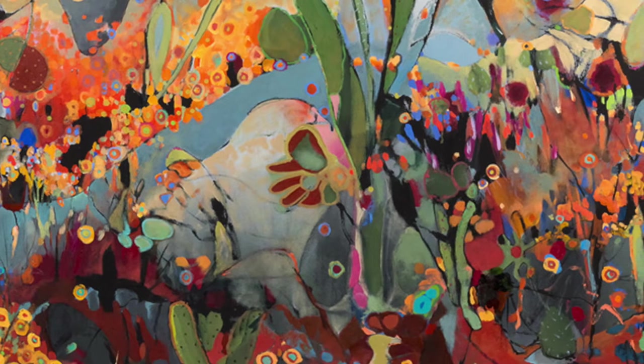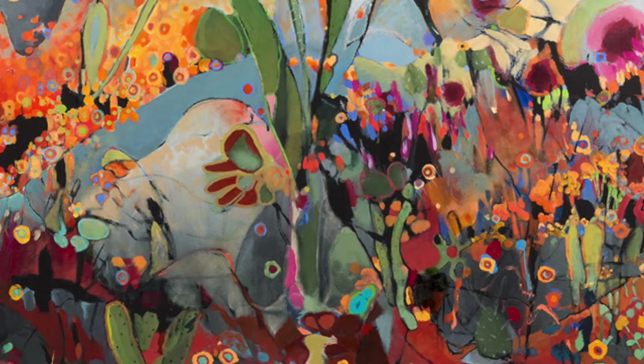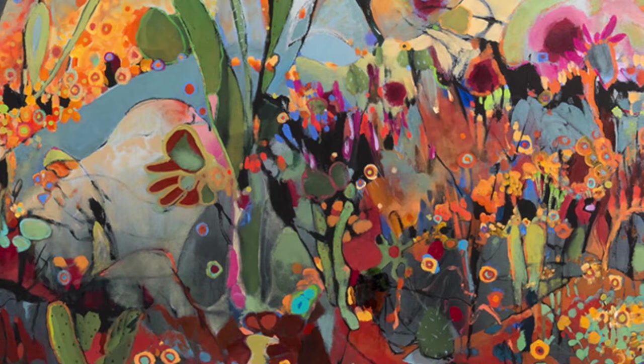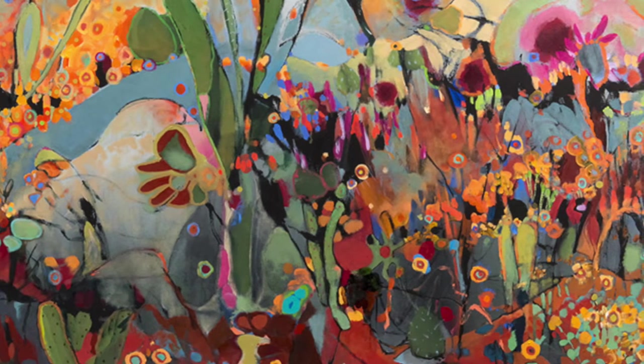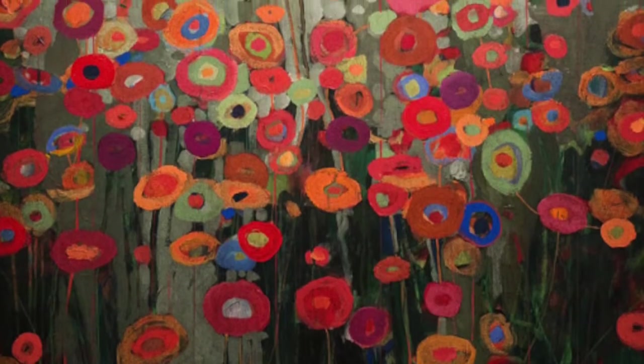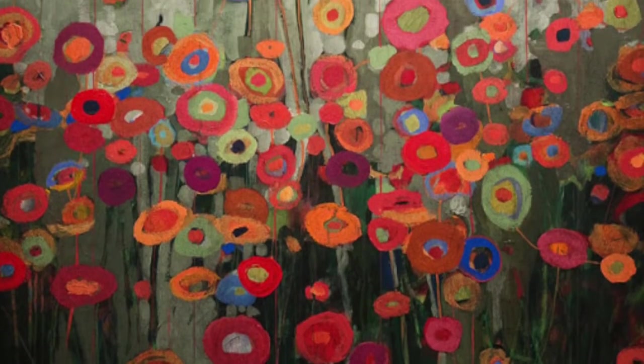When artists like Don paint, they mix colors together to create new colors and then they often mix those colors together to make even more new colors. It looks like Don created a lot of different colors of red for this painting. Look closely and see how many different colors of red you can find.